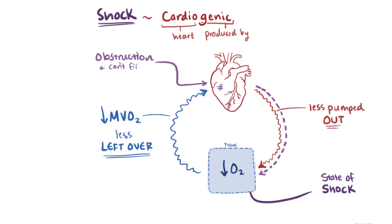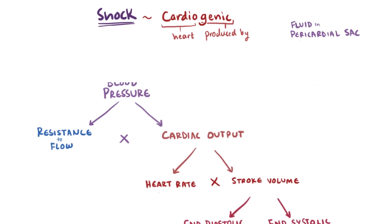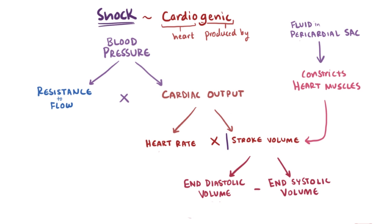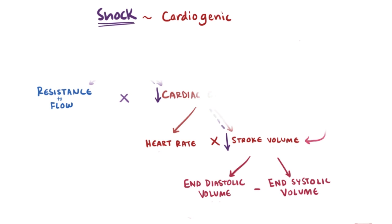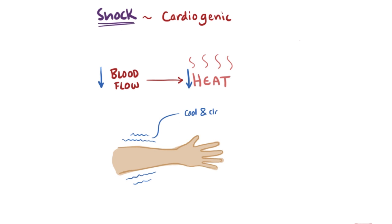Sometimes an obstruction prevents the heart from filling properly. For example, the pericardial sac can fill with fluid from infection or blood from trauma like a stab wound. If this sac fills up, it physically constricts the heart from expanding and contracting normally, reducing stroke volume. This is sometimes subclassified as obstructive shock. Like hypovolemic shock, the reduction in cardiac output decreases blood flow, making the skin cool and clammy — so cardiogenic shock is also considered a cold shock.